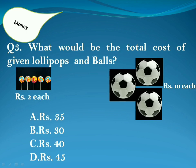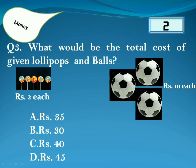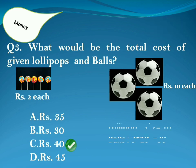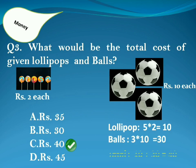What would be the total cost of the given lollipops and balls? Answer is Option C. Because for lollipops, 5 into 2 is equal to 10, and for balls, 3 into 10 is equal to 30. So the total will be 40 rupees.